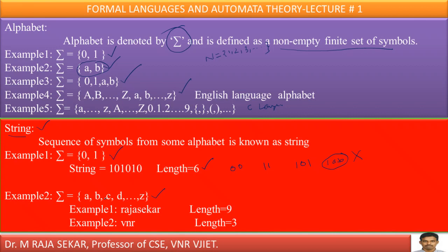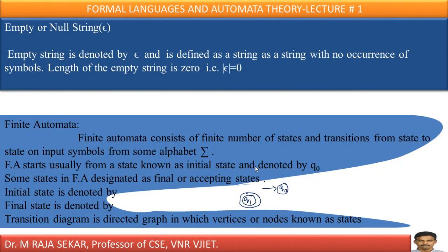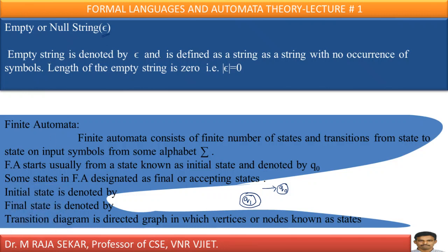Let our alphabet be small a to small z. The string 'Rajashekar' is a string from this alphabet. Counting the characters in this name, there are 9 letters, so the length of this string is 9. 'VNR' is also a string from this alphabet with string length 3. Empty string or null string: the empty string is denoted by epsilon. Wherever epsilon appears, it means an empty string. It is defined as a string with no occurrence of symbols, so its length is 0. That is, mod of epsilon equals 0.